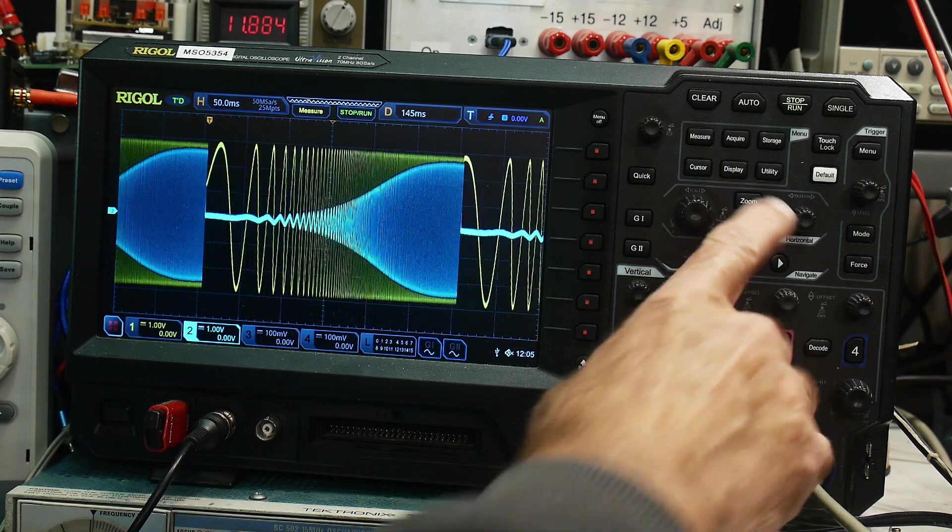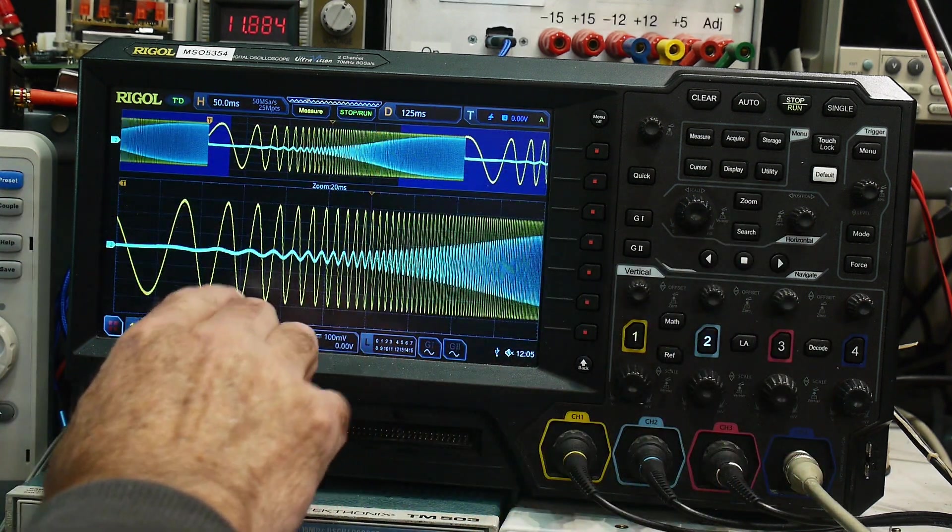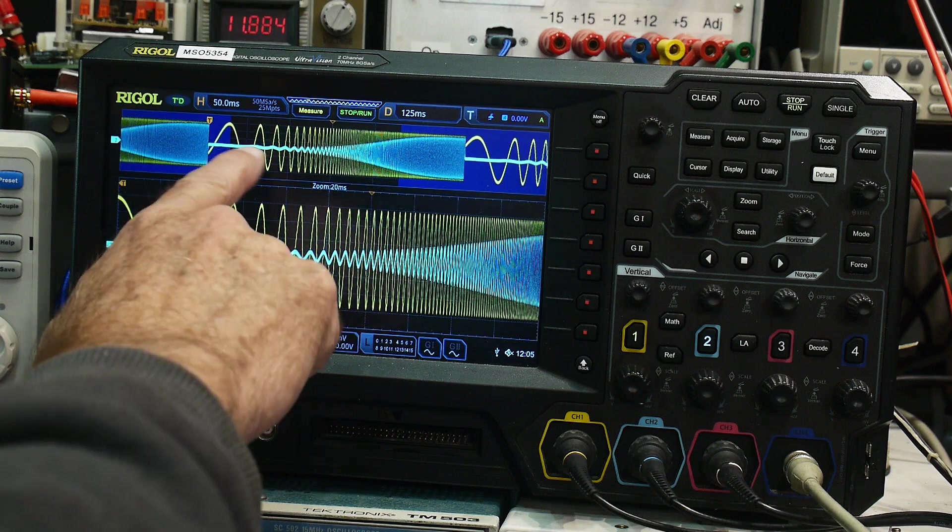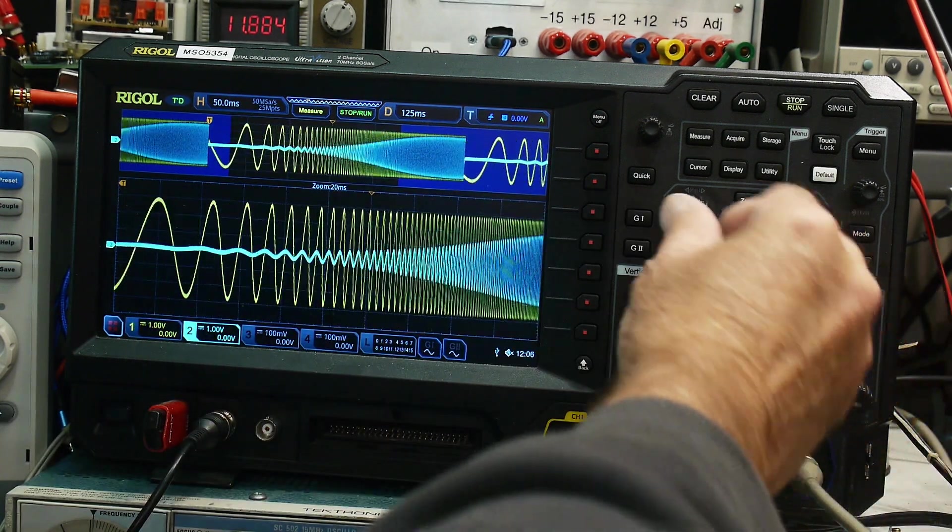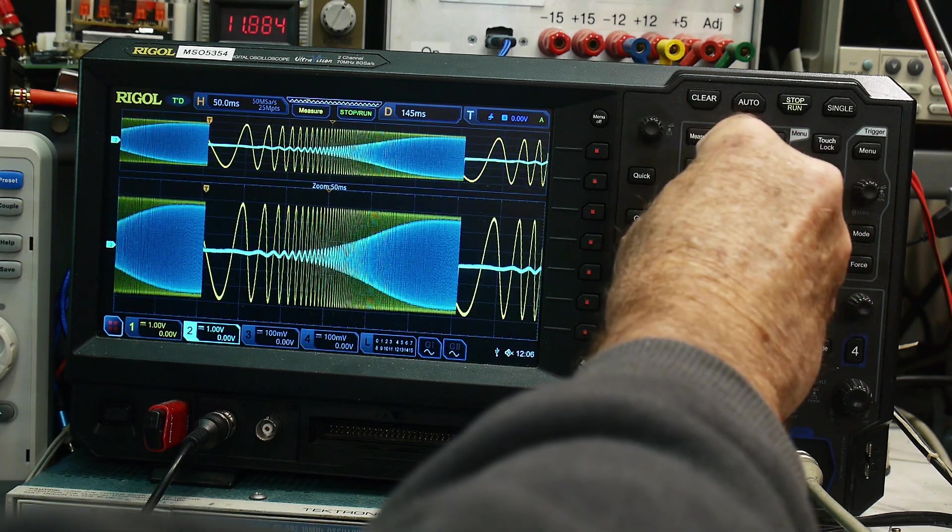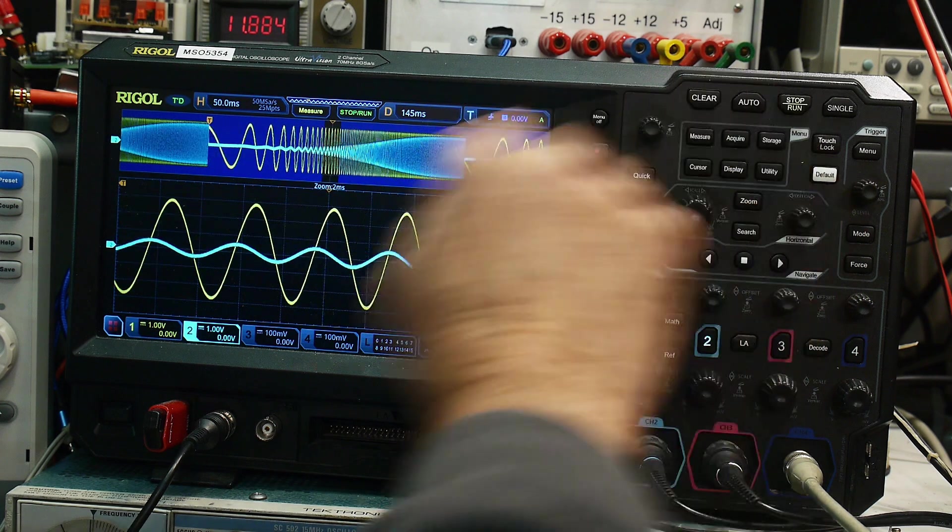So if we zoom in on this, we see that it's very small here, right? And if we zoom in over in this section here, we turn the knob this away.